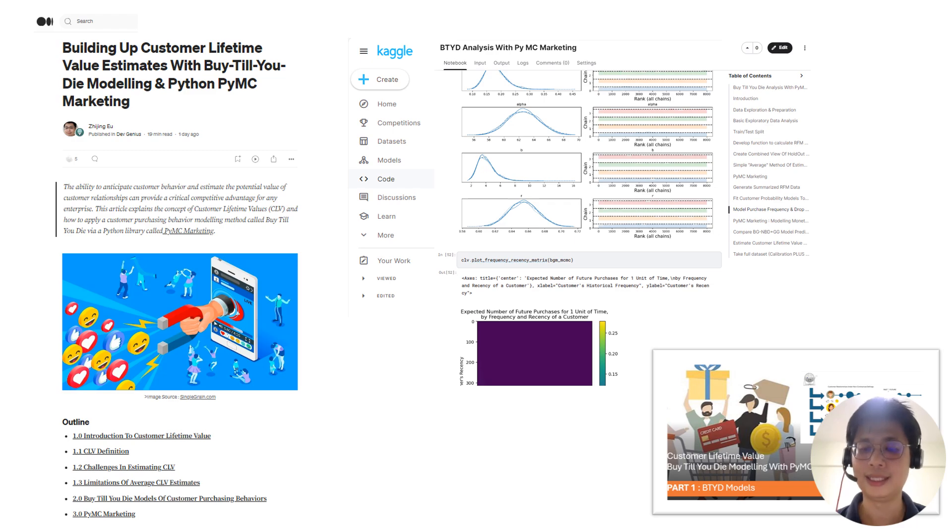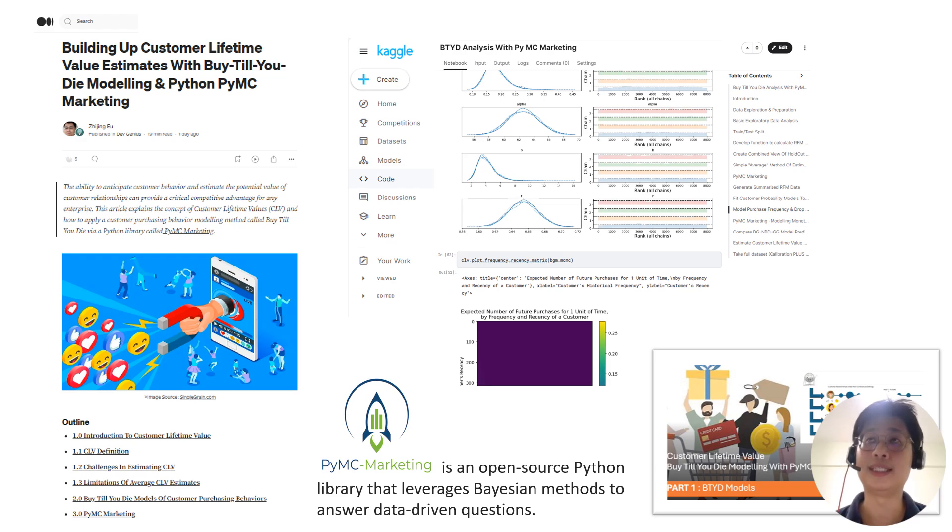In the previous video I covered the theory behind buy-till-you-die modeling. For today's video we're going to be talking about how PyMC Marketing works under the hood. It is a very specific approach to problem solving that uses Bayesian methods. Fair warning, this video will have some math in it. If you don't like this kind of thing you can actually skip forward to just the Python code. But I find that it's quite useful to understand how these things actually work. At the same time, much like how you don't need to know the way that cellular networks work in order to place a call on your cell phone, you can actually just jump straight into the coding later.